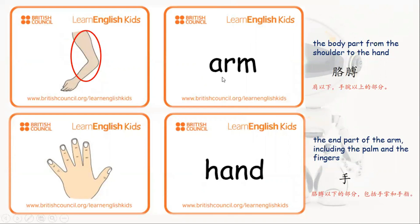Arm. Arm is the body part from the shoulder to the hand. 胳膊。胳膊就是肩膀以下、手腕以上的部分。